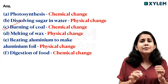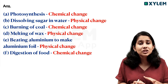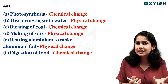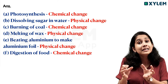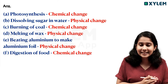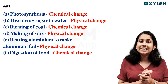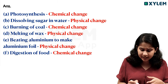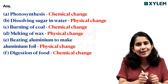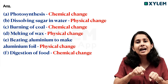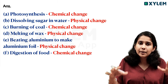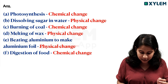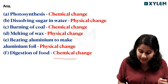Burning of coal involves chemical reactions, so it is a chemical change. Melting of wax — the wax will melt and change in physical properties, so it is a physical change. Beating aluminium to make aluminium foil is a physical change. Digestion of food is a chemical change.